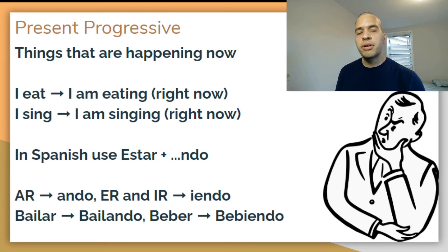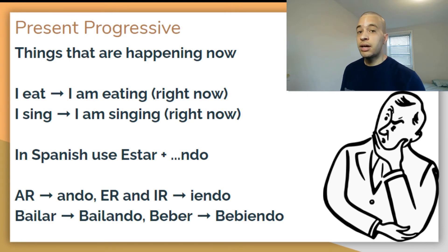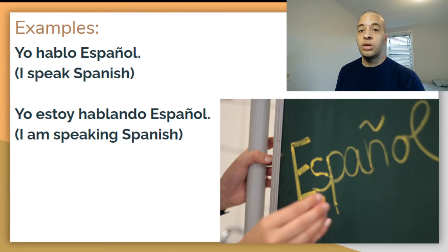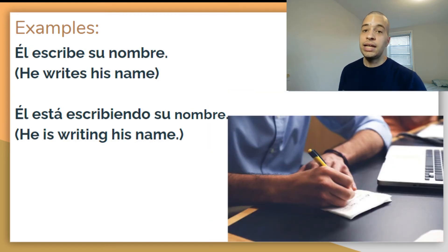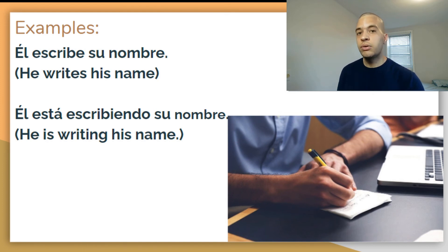So that's what the present participles look like. Now let's take a look at a couple quick examples seeing how the present progressive looks and sounds in Spanish. 'Yo hablo español' becomes 'Yo estoy hablando español.' 'Tú comes carne' becomes 'Tú estás comiendo carne.' And 'Él escribe su nombre' becomes 'Él está escribiendo su nombre.'